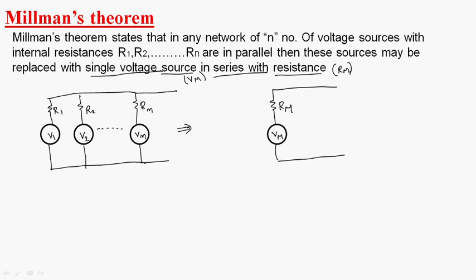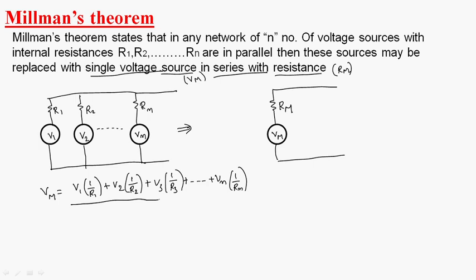This is Millman's theorem. Now, what about Vm — how can we find Vm? Vm is equal to V1 times (1/R1) plus V2 times (1/R2) plus V3 times (1/R3), and so on, plus Vn times (1/Rn), all divided by (1/R1) plus (1/R2) and so on plus (1/Rn).